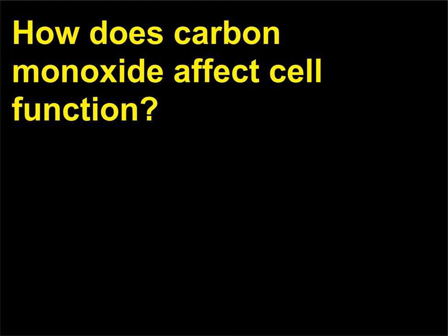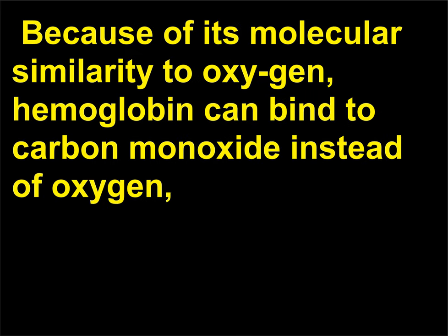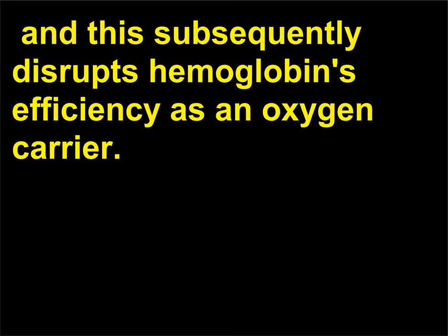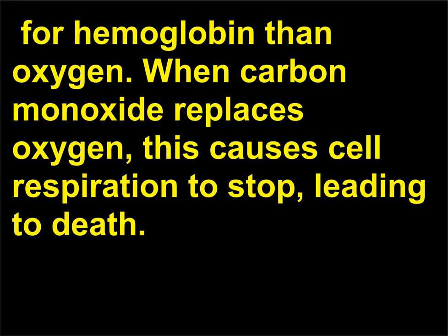How does carbon monoxide affect cell function? Carbon monoxide is a highly poisonous gas. Because of its molecular similarity to oxygen, hemoglobin can bind to carbon monoxide instead of oxygen, and this subsequently disrupts hemoglobin's efficiency as an oxygen carrier. Carbon monoxide actually has a much greater affinity — about 300 times more — for hemoglobin than oxygen. When carbon monoxide replaces oxygen, this causes cell respiration to stop, leading to death.